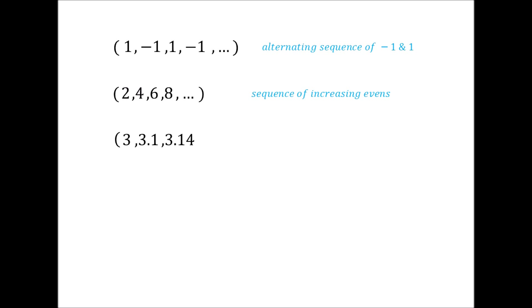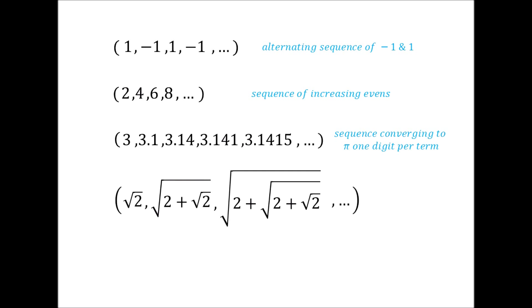3, 3.1, 3.14, 3.141, 3.1415. A sequence that starts with the first digit of pi and adds one more digit of pi by each term. And lastly, √2, √(2 + √2), √(2 + √(2 + √2)), and so on.